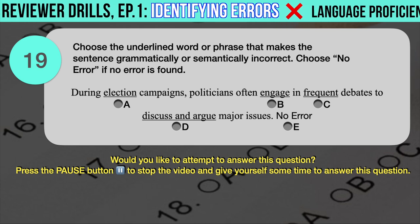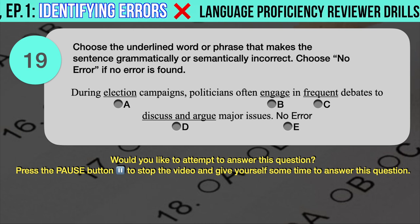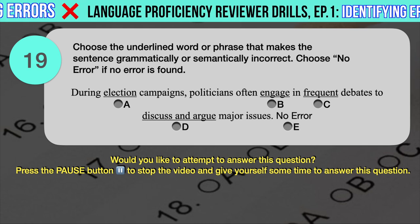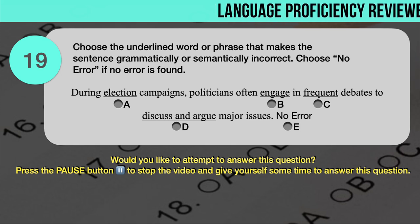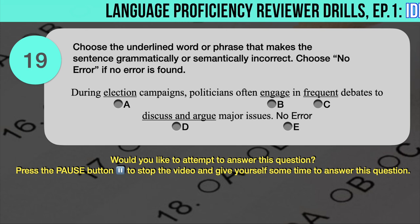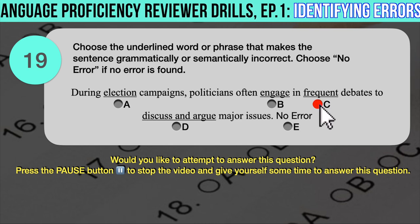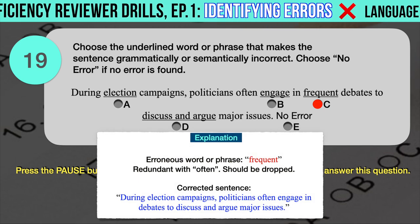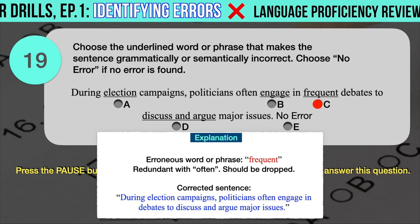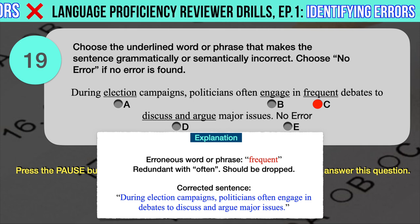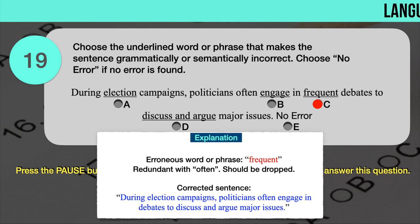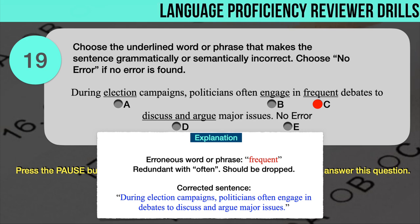Drill question number 19. 'During election campaigns, politicians often engage in frequent debates to discuss and argue major issues.' The underlined words are: A. Election, B. Engage, C. Frequent, D. Discuss and argue. The correct answer is C. The erroneous word is 'frequent' — since 'often' is already used, 'frequent' is rendered redundant and can simply be dropped. Correct sentence: During election campaigns, politicians often engage in debates to discuss and argue major issues. Note: dropping 'often' instead would also be grammatically correct, but 'often' is not among the underlined words, so it is presumed correct.